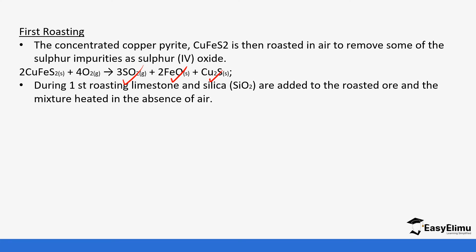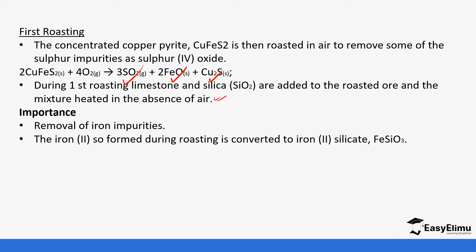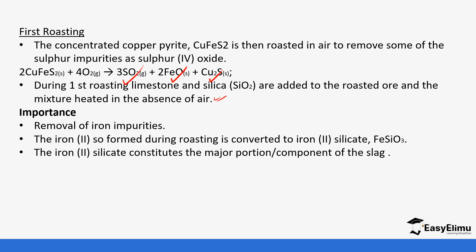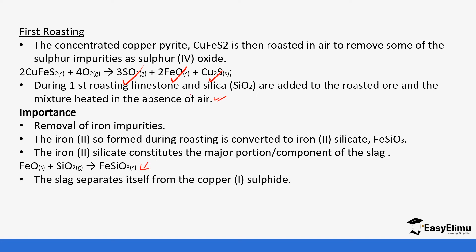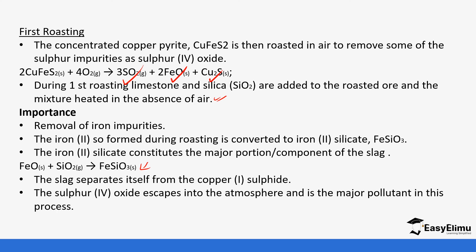During the first roasting, limestone and silica are added to the roasted ore and the mixture is heated in the absence of air. This helps to remove the iron impurities — the iron(II) oxide formed during roasting is converted to iron(II) silicate. The iron(II) silicate constitutes the major portion of the slag, and the slag separates itself from the copper(I) sulfide. The sulfur dioxide escapes into the atmosphere and is one of the main pollutant gases.